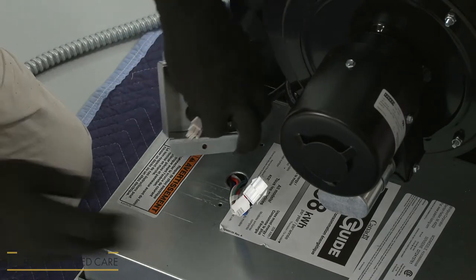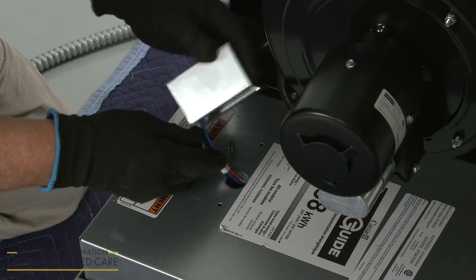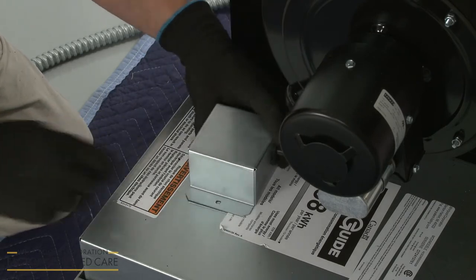Next, connect the blower electrical connector to the cooktop. Position the cover on the burner box and secure it with the two screws.